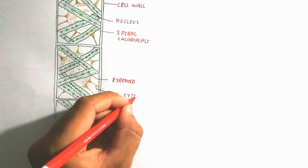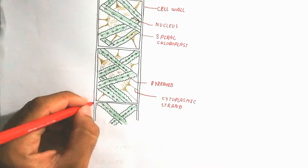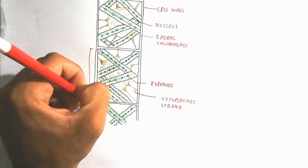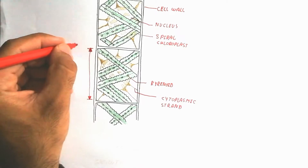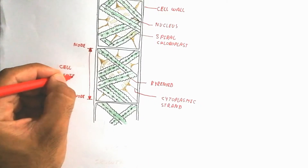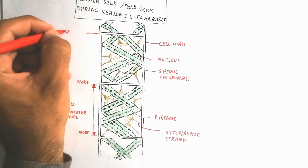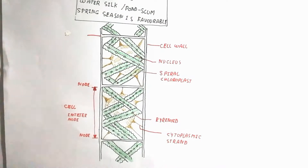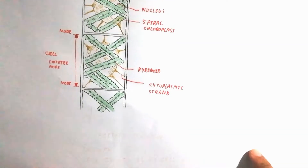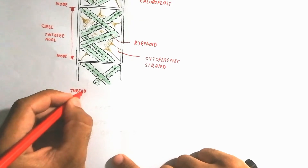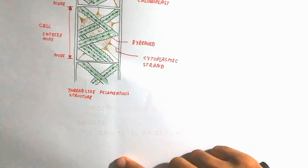A spiral chloroplast is present, attached with the pyranoid. The pyranoid is the storage site for lipids and carbohydrates. The cytoplasmic strand is present here. The distance from cell to cell is known as a node, and the area between cells is the internode. The chloroplast is in the form of a ribbon-like spiral structure, and the septum separates two cells.